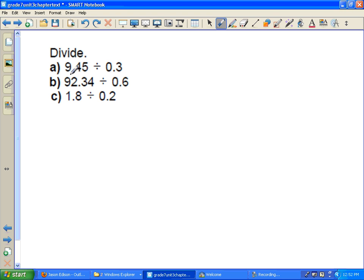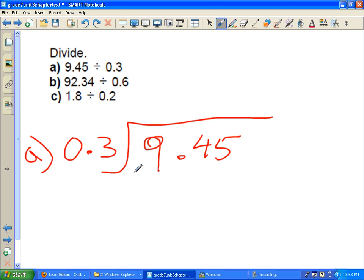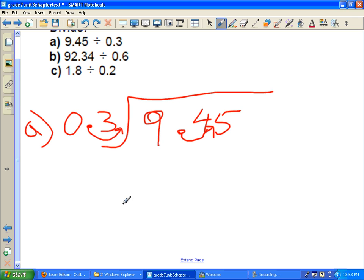To divide, all you simply do is write down your problem, and I'll do the example from A. It's 9.45, and we're going to divide it by 0.3. Now the easiest way to do that is we want this to be a whole number. So we're going to shift it one place to the right. But if you do it on the outside, you must do it on the inside. Shift it one place. So now our new problem becomes 3 divided into 94.5.